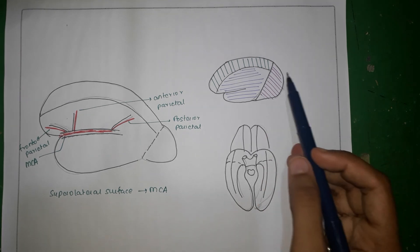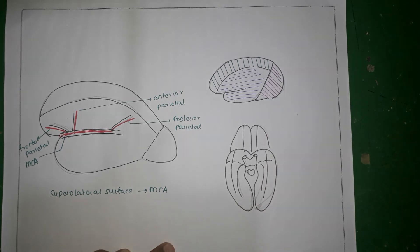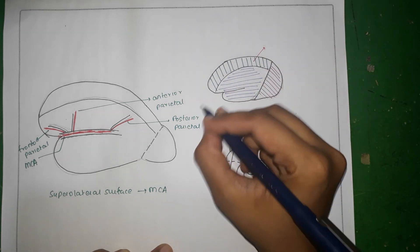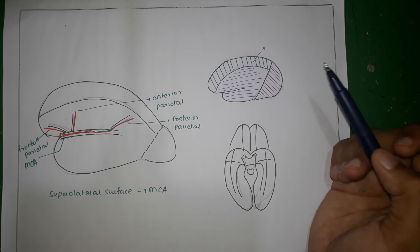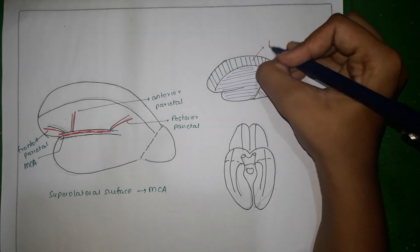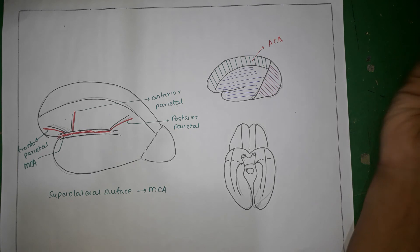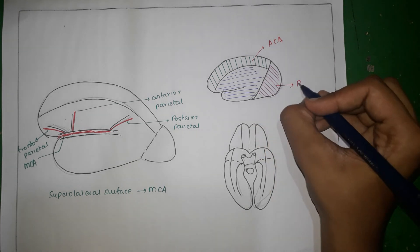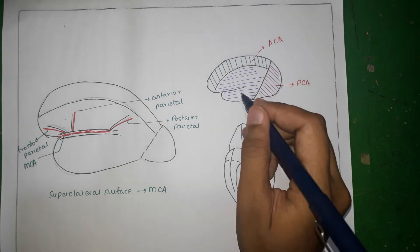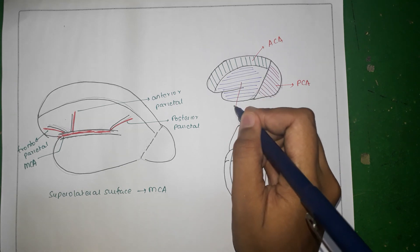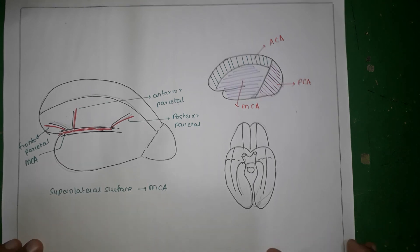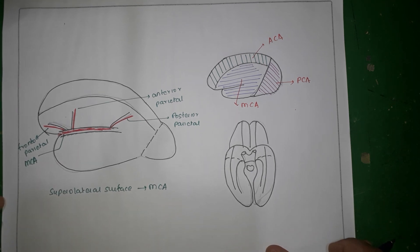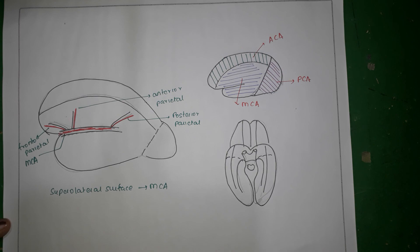This final diagram shows the areas supplied by different cerebral arteries. Most of the medial surface and a 2 cm bandwidth of the superolateral surface is the region of the anterior cerebral artery. The occipital lobe is the region of the posterior cerebral artery, and most of the parietal lobe and the temporal pole is the region of the middle cerebral artery. That's it for the blood supply of the brain. Thank you for watching.